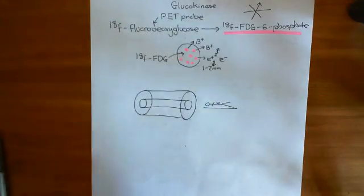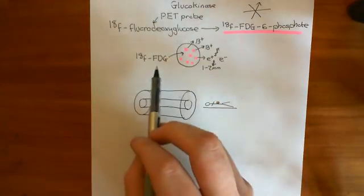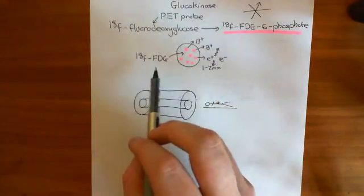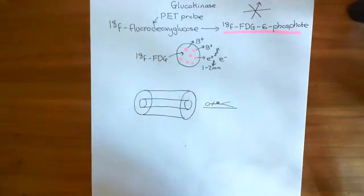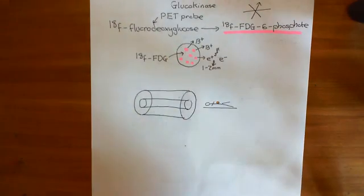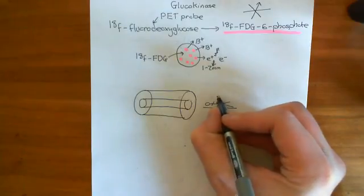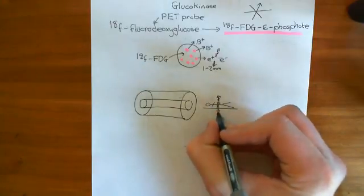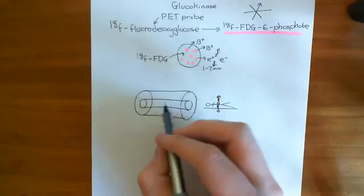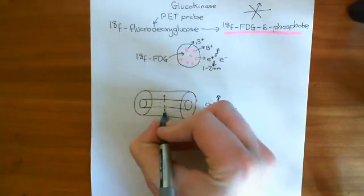So this is a tumor here. And it's taken up lots and lots of this 18F-fluorodeoxyglucose. And it's now releasing a lot of positrons. And those positrons are hitting electrons and annihilating one another. So let's say we're getting gamma photons coming off at him like this. Basically, those gamma photons will be coming off at exactly opposite directions.